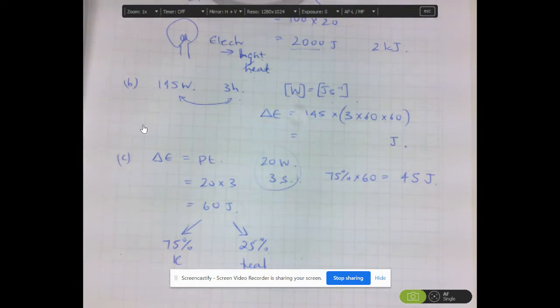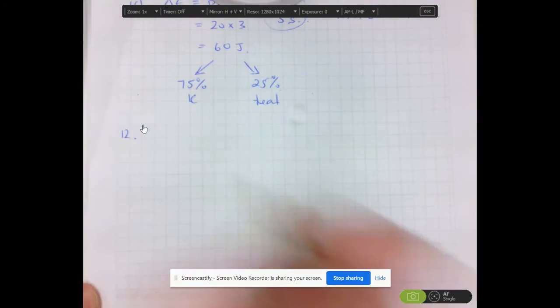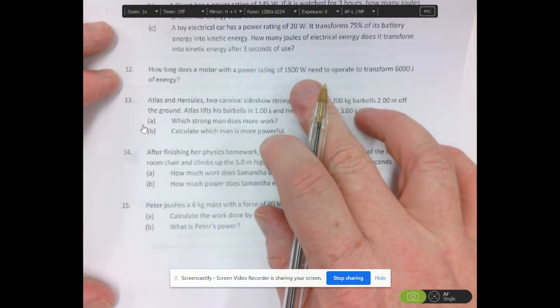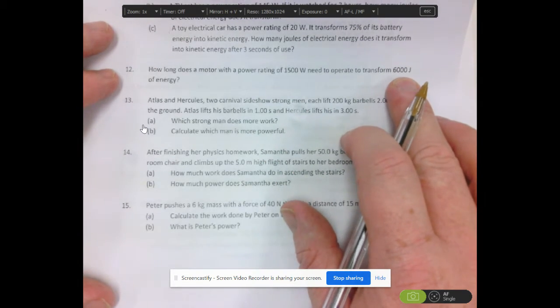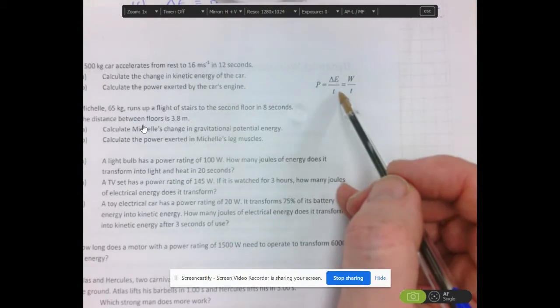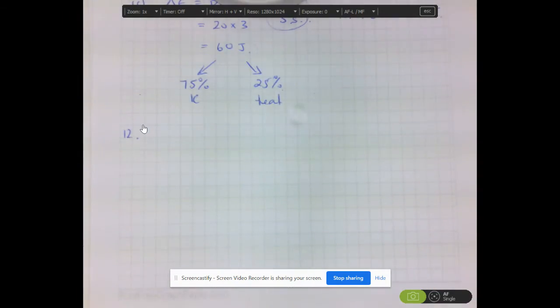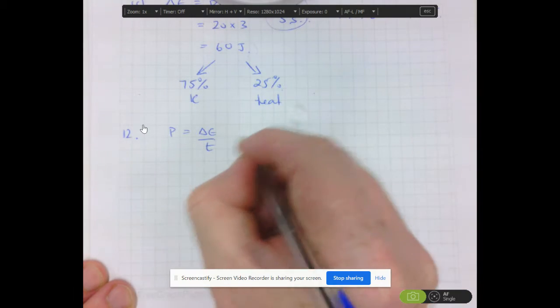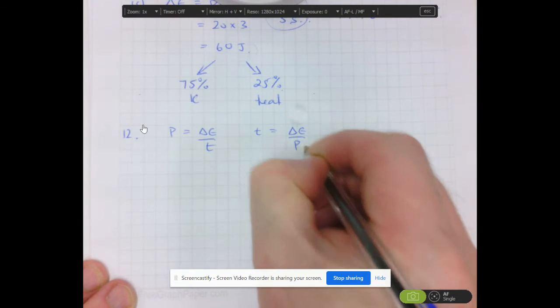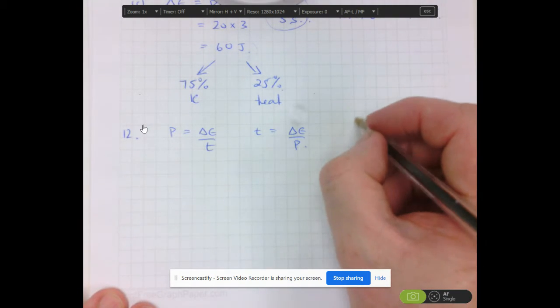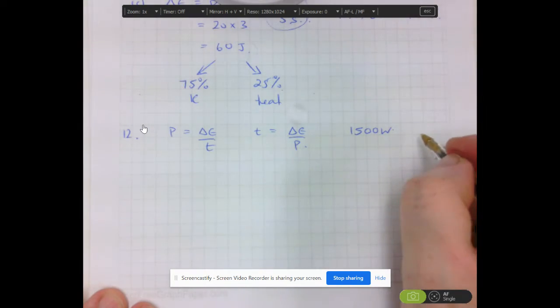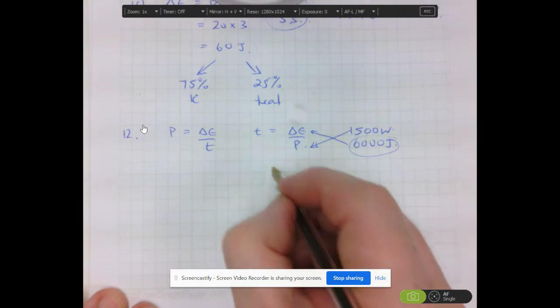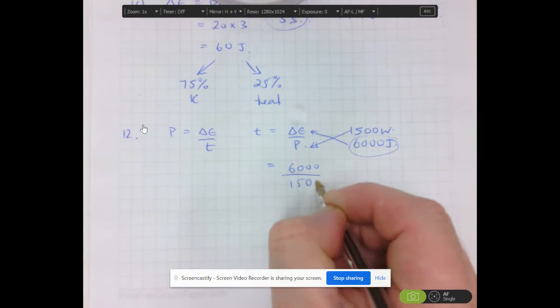Moving on to question 12. How long does a motor with a power rating of 1,500 watts need to operate to transform 6,000? So basically we'd be doing this formula and this time we're trying to solve for T. So if we're solving for T, if P equals delta E on T, then making T the subject, T would be delta E on P. So applying that to our question, we know that the motor has a power rating of 1,500 watts and the amount of energy is 6,000 joules. So this is delta E and this is the power rating there. So that's 6,000 on 1,500.